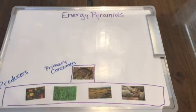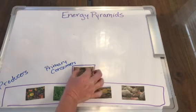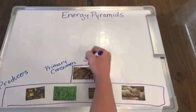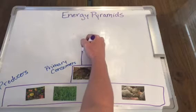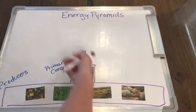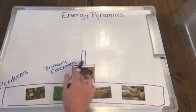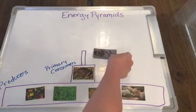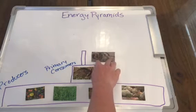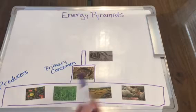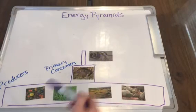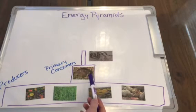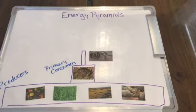The next level of the energy pyramid is going to be only one-tenth the size of this level. On that level we have the secondary consumers. I'm going to put a gopher snake that eats the gophers. There are very few of them compared to how many primary consumers there are.